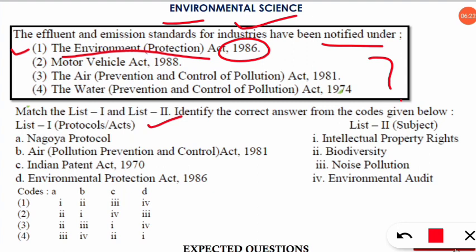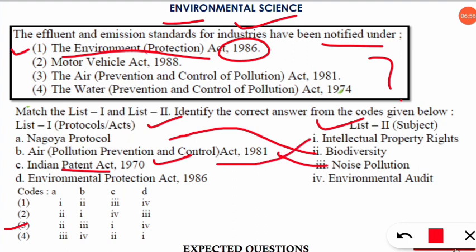The next question is again a match-the-following matching protocols or acts with their concerned subjects. The correct option is option number three. The Nagoya Protocol relates to biodiversity protection. The Air Prevention, Pollution and Control Act 1981 matches with noise pollution. The Indian Patent Act 1970 — note this down — matches with intellectual property rights. The Environmental Protection Act matches with environmental audit.